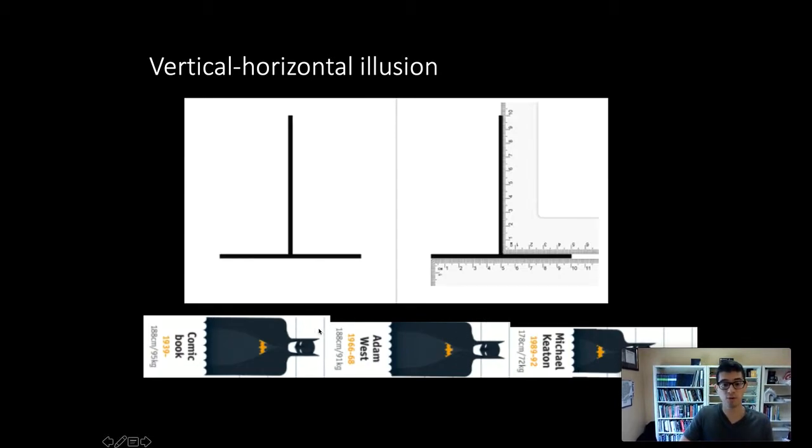We're much more able to tell that the comic book Batman is actually wider than the Adam West Batman, and that one's wider than the Michael Keaton Batman. Now it's easier to see that the Michael Keaton Batman weighed quite a bit less than the fictional Batman of the comic book. Even though we could already tell he was shorter, the difference in weight was harder to tell.